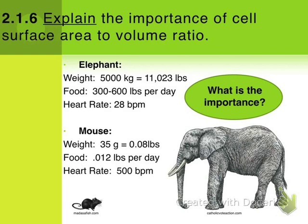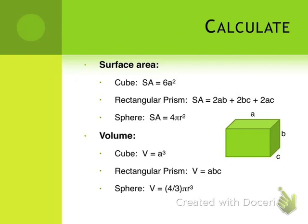Before we talk about specifics of an individual cell, let's look at how to calculate surface area to volume ratio. This will be important in the lab that's coming up, and possibly on an exam question. We're going to look at three shapes: a cube, a rectangular prism, and a sphere.